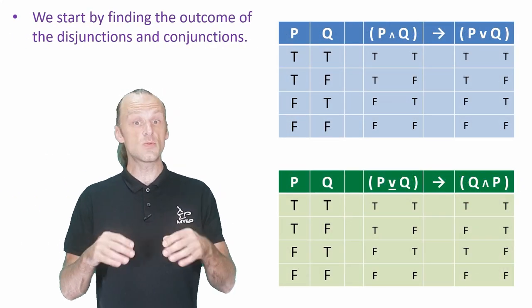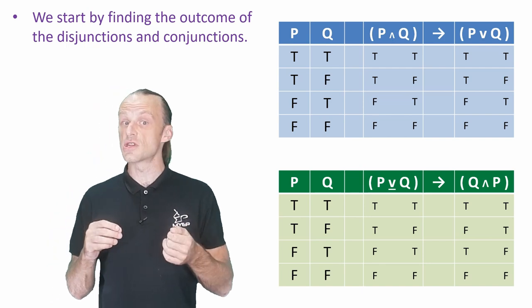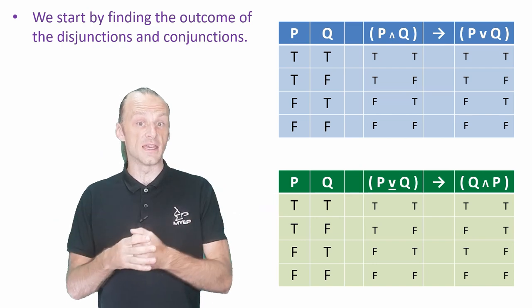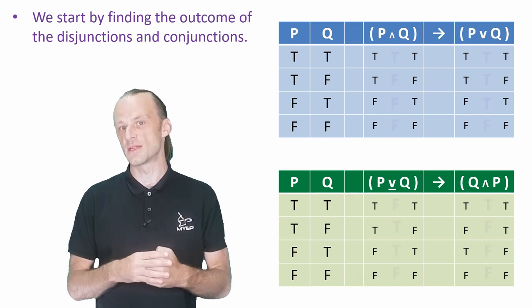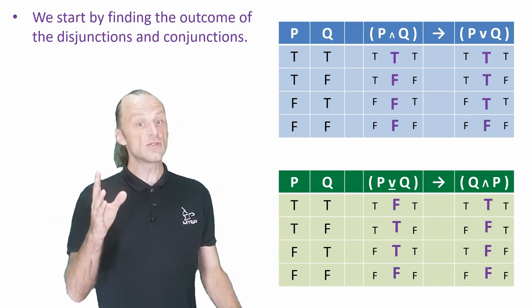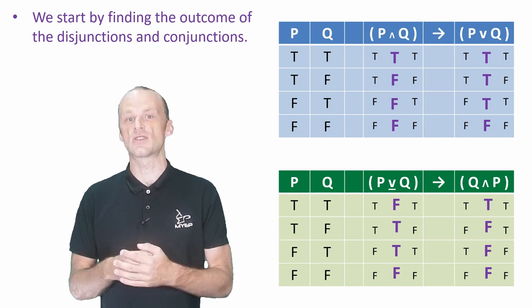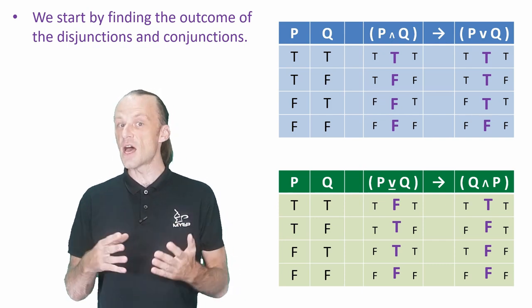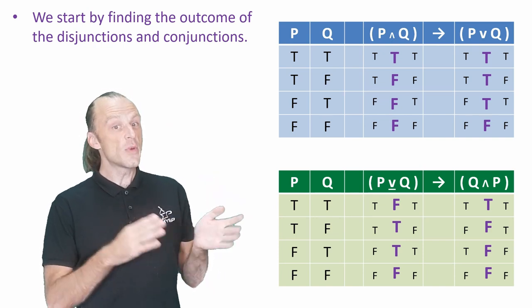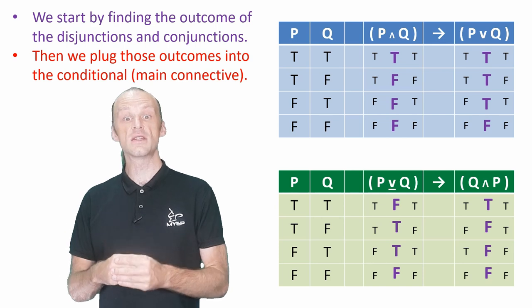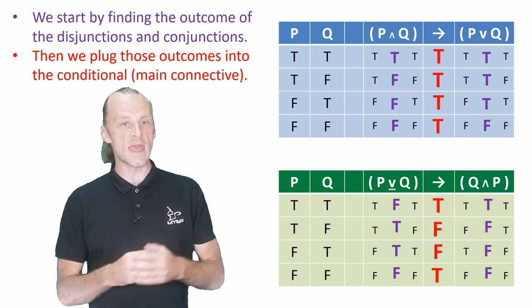In both cases, we'll start by looking at the disjunctions and conjunctions. We've put them in brackets, but this would be the same without the brackets, because they are the least dominant parts of the expression. By using the truth tables, we can get one truth value for each side of the expression. These are the purple letters. We can then use the truth table for the conditional on these purple letters to find the output of the main connective.